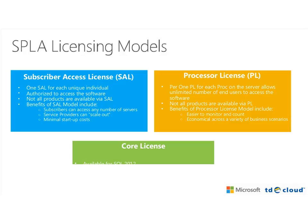Finally, core licenses are similar to processor licenses except you count cores instead of processors. SQL is the most popular product under core licensing, with BizTalk being the other. Those are the only two products in SPLA that have core licenses. If you're on SQL, you count all the cores and report that. They come in two-core packs as listed in the product terms and price list.